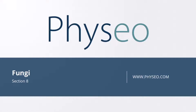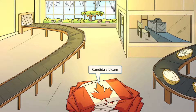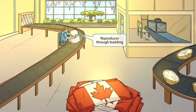Welcome to Section 8 of Fungi. This is our Fungi overview figure. In this video we'll be discussing Candida albicans, which you can see right here. This scene will take place inside of a factory that makes Canadian flags out of cotton. The word Canada sounds like Candida, so all of these Canadian flags front and center should help you remember that this image is about Candida albicans.